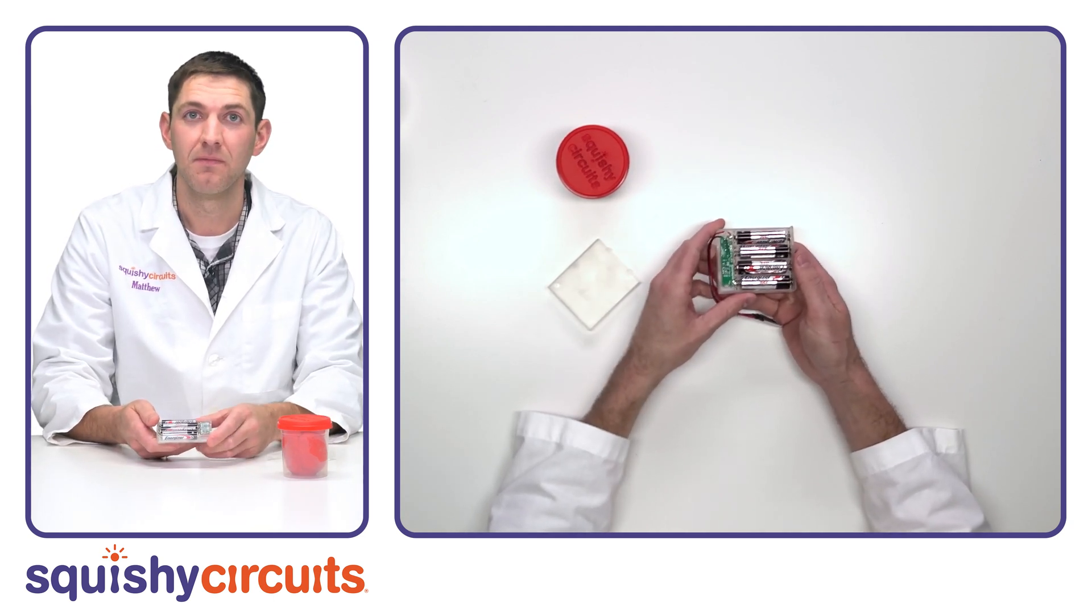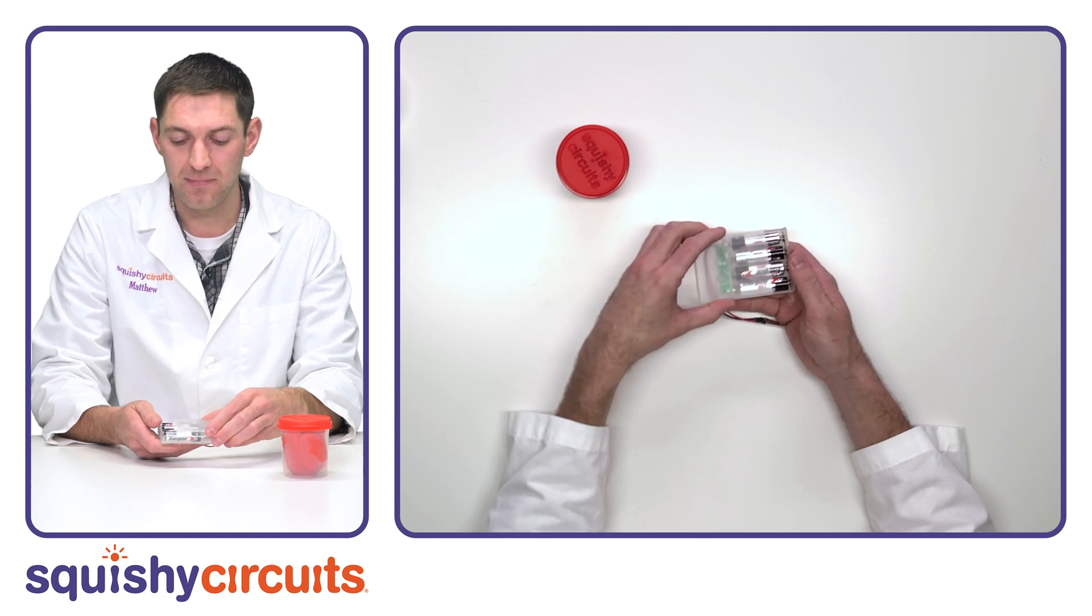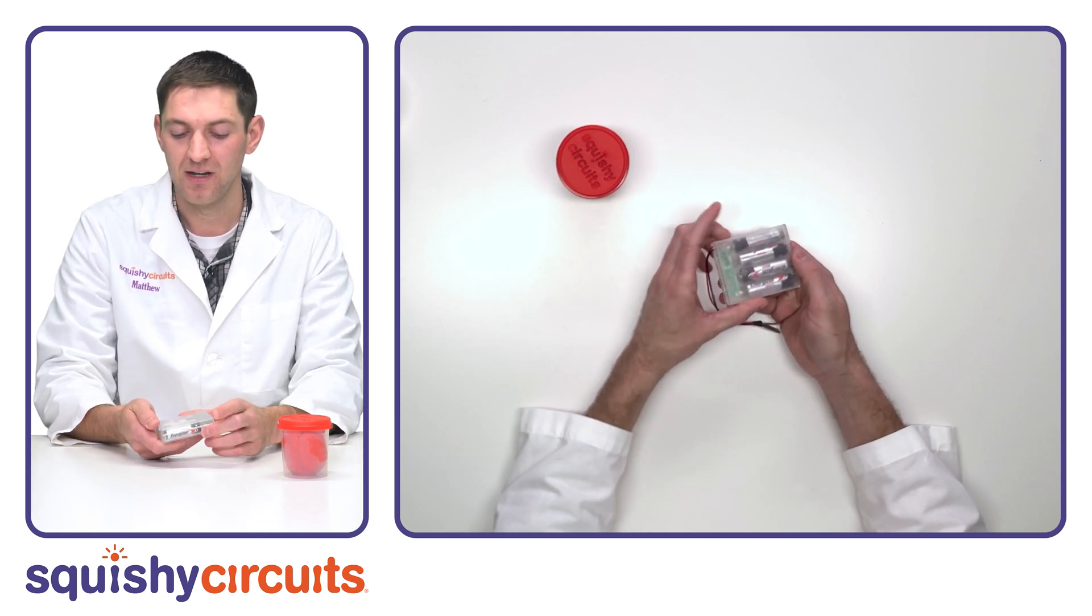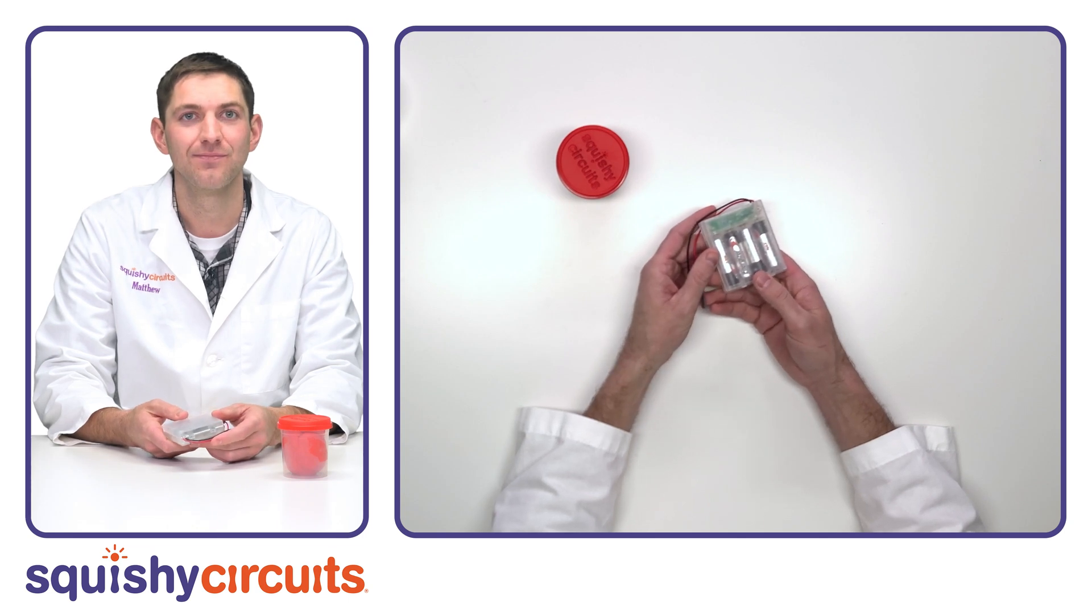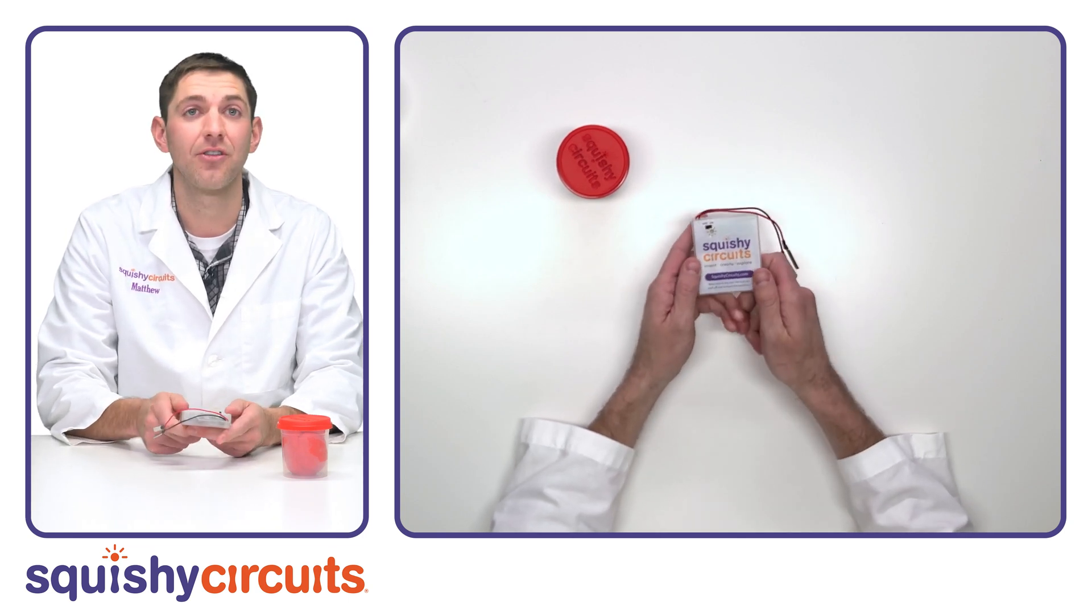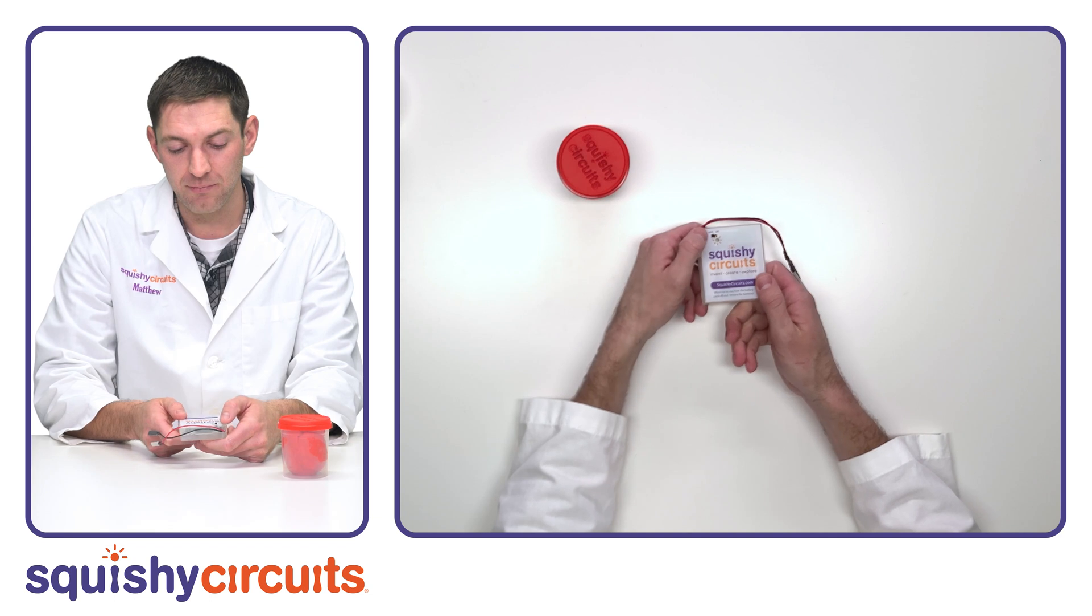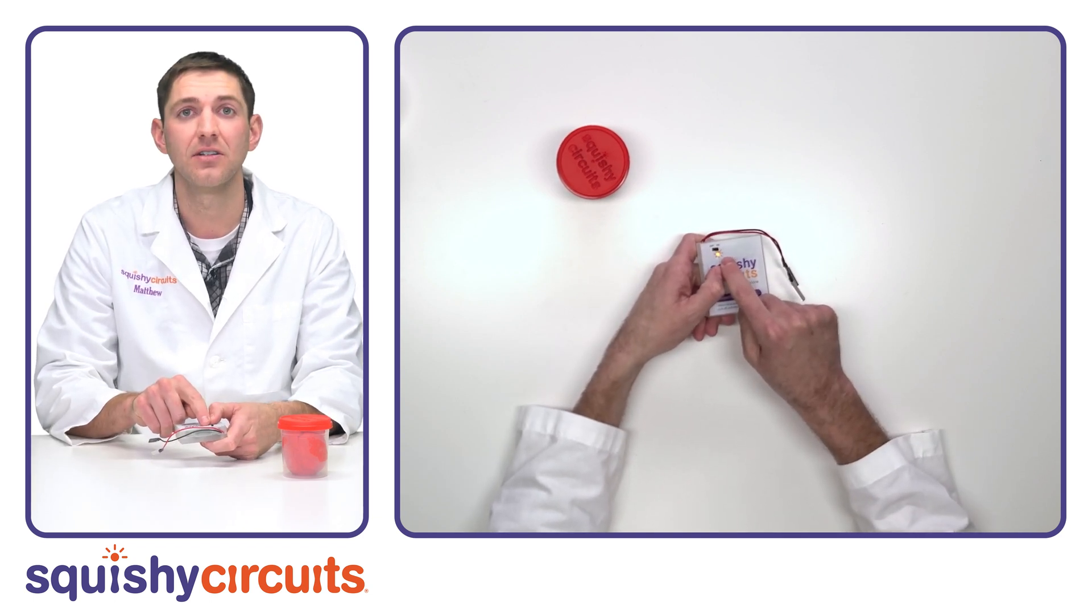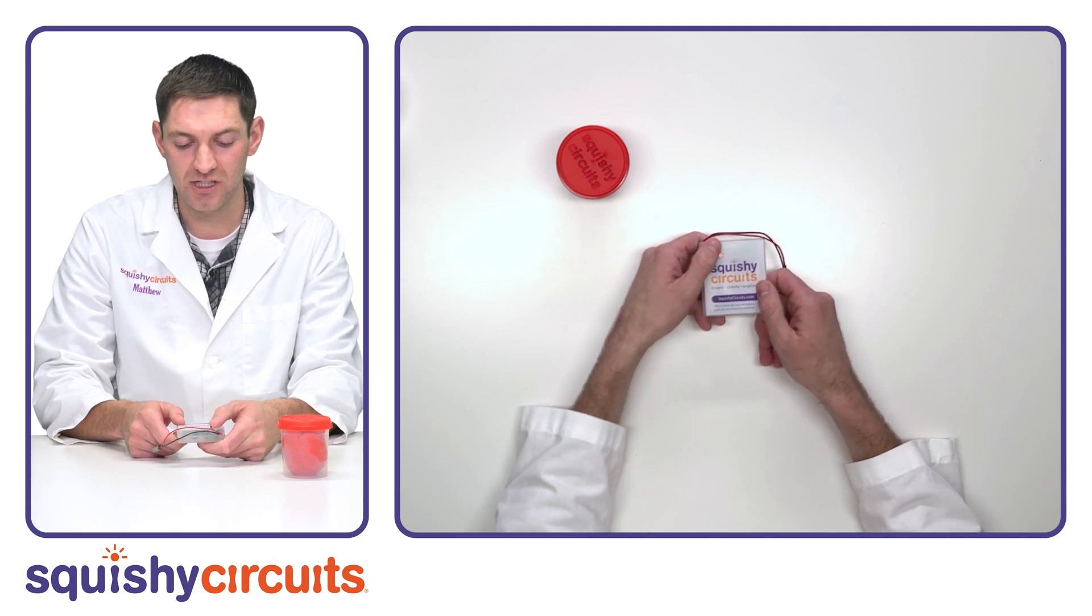To replace the cover, set it on top and slide it downward, slightly depress in the triangle region, and it will click back into place. You can flip it over and make sure that your battery holder is working by briefly switching it on and double checking to see that the orange indicator light is glowing. Let's switch it back off.